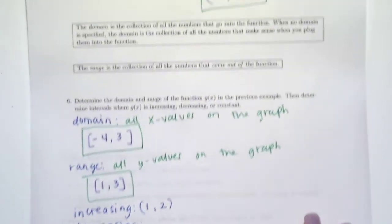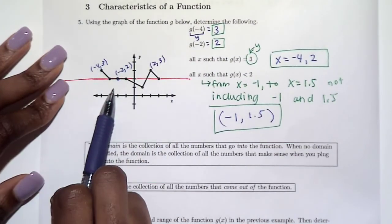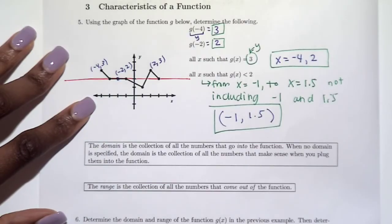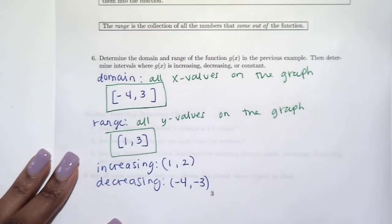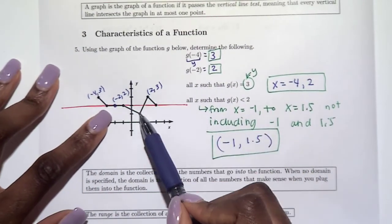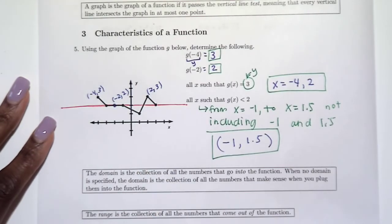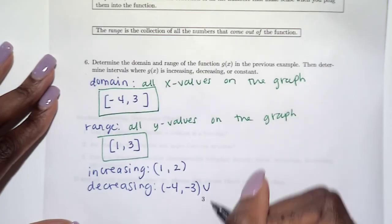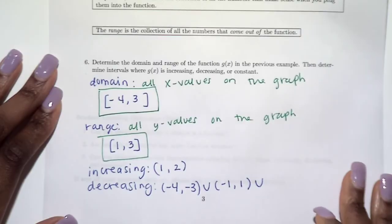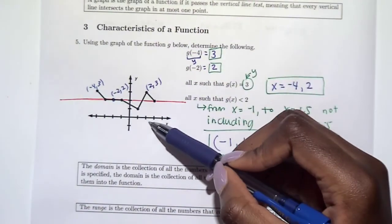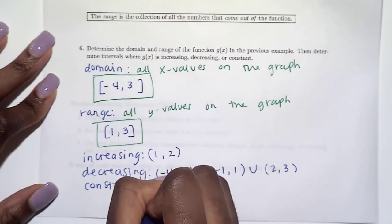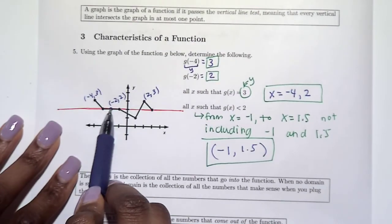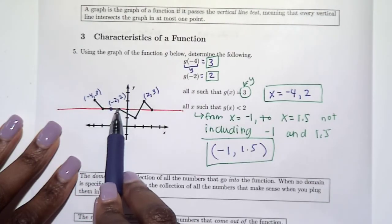Now let's look at decreasing — where is the function going down reading left to right? It's going down between x equals negative four and negative three. It's also decreasing between x equals negative one and positive one, and we use the union symbol to combine intervals. It's also decreasing from x equals two to three. Finally, the straight horizontal line on the graph is where it's constant, which is between x equals negative three and negative one.